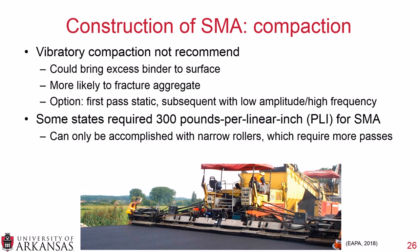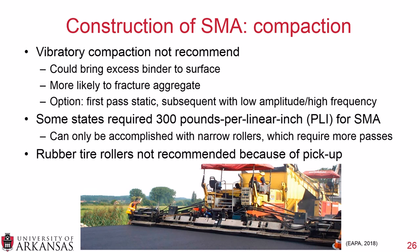Some states in the United States require a maximum of 300 pounds per linear inch for SMA rollers, which reduces aggregate fracturing and excess binder on the surface. This can only be accomplished with narrow rollers, which means more passes are needed — somewhat difficult with the shorter paving train. Rubber tire rollers are not recommended because of the high chance of pickup, where single coarse aggregates could be pulled out of the mat by sticking to the pneumatic tires.